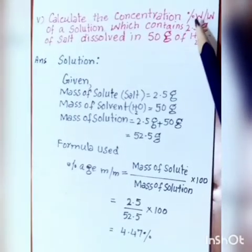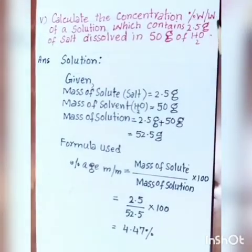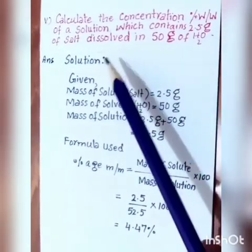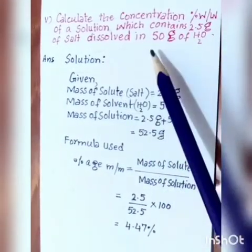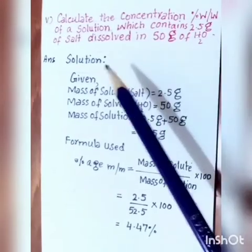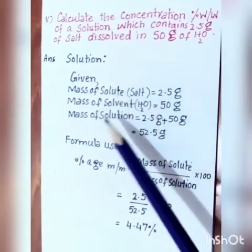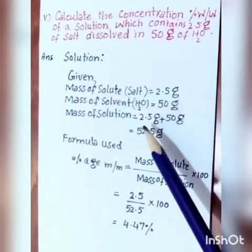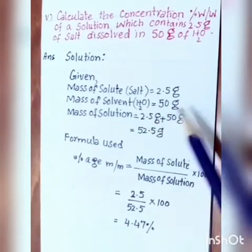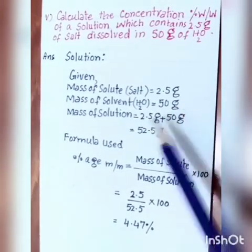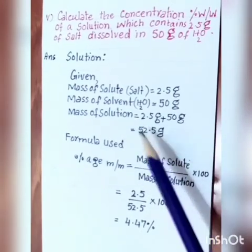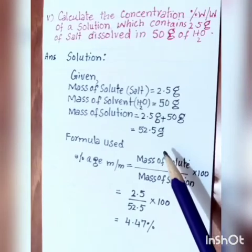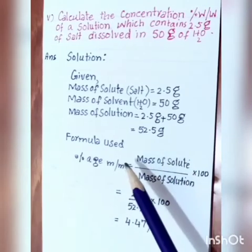Calculate the concentration percentage weight by weight of a solution which contains 2.5 grams of salt dissolved in 50 grams of water. Given: mass of solute (salt) = 2.5 grams, mass of solvent (water) = 50 grams. Total mass of solution = 2.5 + 50 = 52.5 grams.